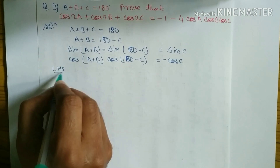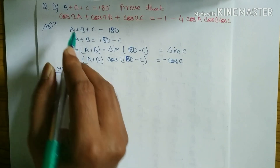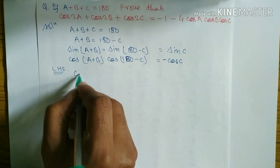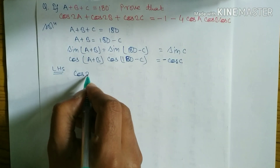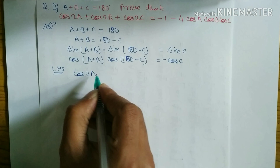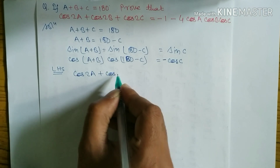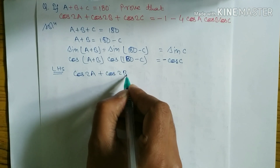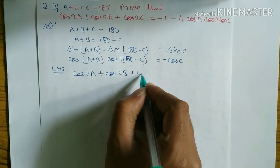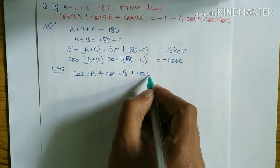Now take the LHS: cos 2A plus cos 2B plus cos 2C.